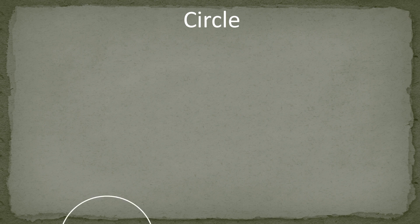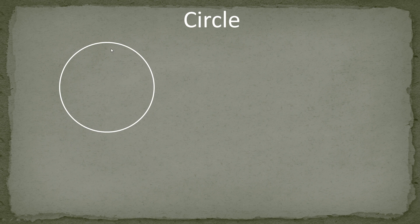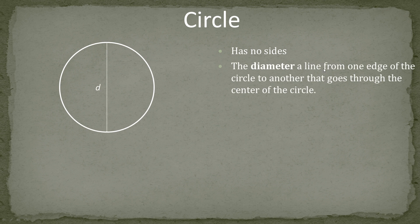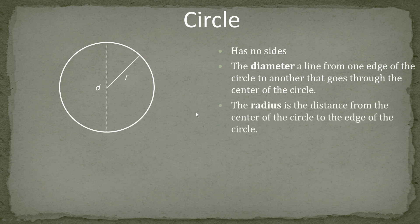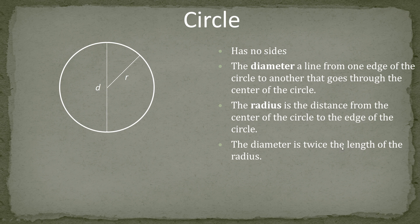The next figure is the circle. What's important about the circle is that all points on the circle are the same distance from the center — that's what makes it a circle. A circle has no sides, or you could say it has infinite sides. The diameter is a line from one edge of the circle to the other that goes through the center — a chord that passes through the center is a diameter. The radius is the distance from the center of the circle to the edge. Two radii make up a diameter, so the diameter is twice the length of the radius.